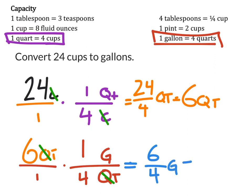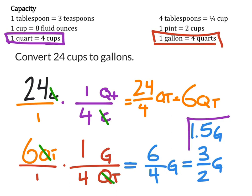I would simply reduce that fraction to make it 3 halves gallons. If you wanted the decimal, you could put 1.5 gallons as well. Either one of these would work. So that is our answer in changing or converting 24 cups into gallons.